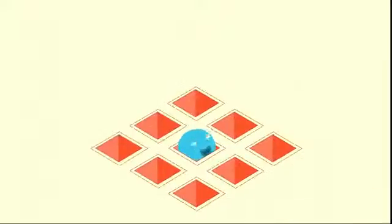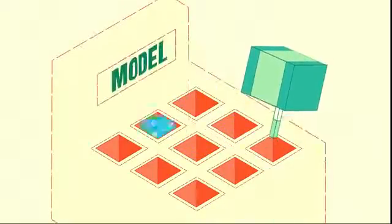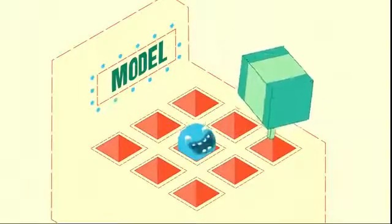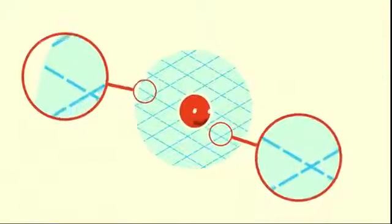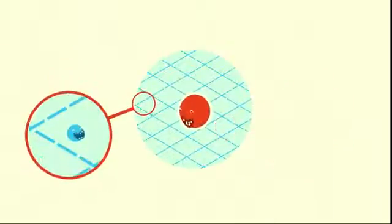One of the weirdest things about electrons is that we can't exactly say where they are. It's not that we don't have the equipment. It's that this uncertainty is part of our model of the electron. So we can't pinpoint them. Fine. But we can say there's a certain probability of finding an electron in a given space around the nucleus.